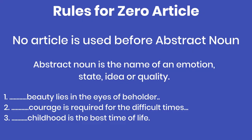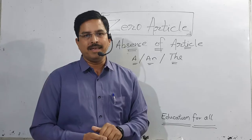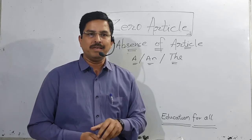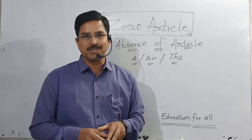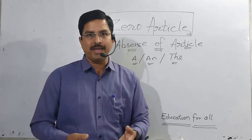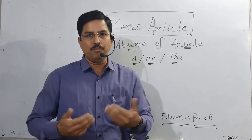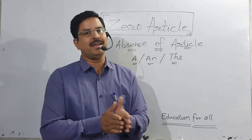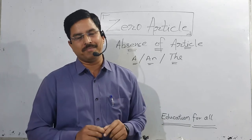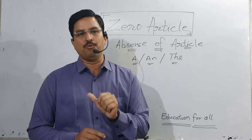'Beauty lies in the eyes of the beholder.' Second sentence: 'Courage is required for the difficult times.' Third sentence: 'Childhood is the best time of life.' In these three examples — beauty, childhood, courage — these are qualities or states. No kind of article is used before them because they are abstract nouns.